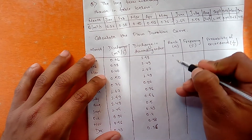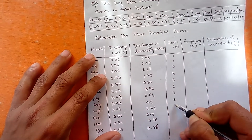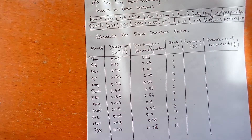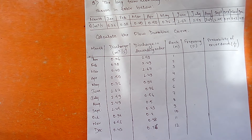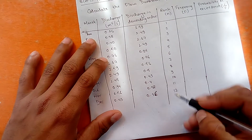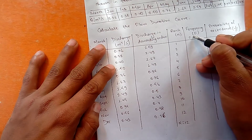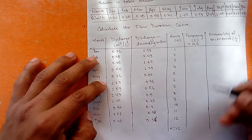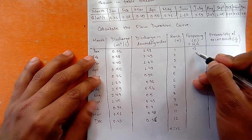Now assign ranks from 1 to 12: 1, 2, 3, 4, 5, 6, 7, 8, 9, 10, 11, and 12. Next we find the frequency. The total number of observations N equals 12. The frequency formula is capital N divided by small n. So the frequency for rank 1 is 12/1 = 12, for rank 2 it is 12/2 = 6, for rank 3 it is 12/3 = 4.